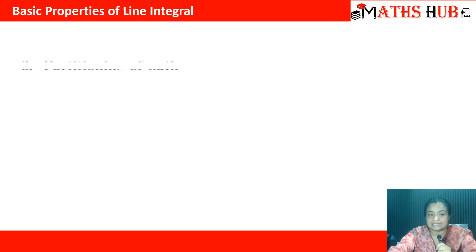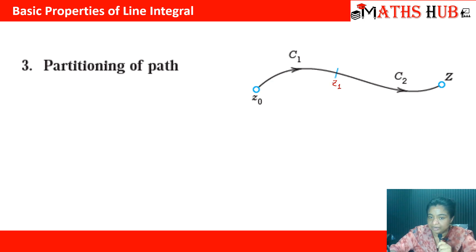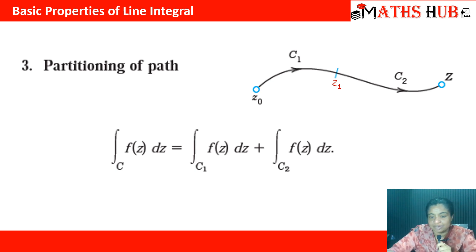The third property of line integral is partitioning of path. Suppose you have a curve consisting of two different curves, C1 and C2. C1 goes from z0 to z1, and C2 goes from z1 to z2. You can always break the integral along C1 and C2. Your curve C consists of very smooth small functions, and you can break the entire curve into small units, sum up over those curves, and get the answer over the entire curve.